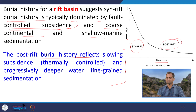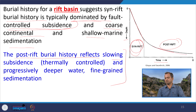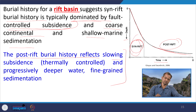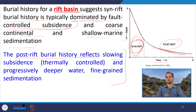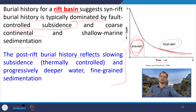At the syn-rift system, subsidence occurs fast, and gradually in the post-rift system the subsidence slows. At the syn-rift system, subsidence is more because of fault activity, but at the post-rift system subsidence is due to sediment overloading and is much less pronounced — meaning tectonics plays more of a role in subsidence than sedimentation does.